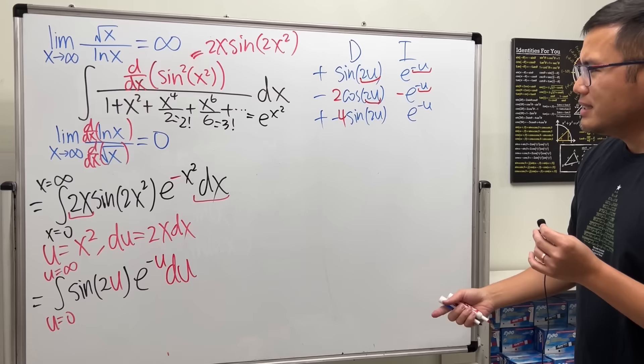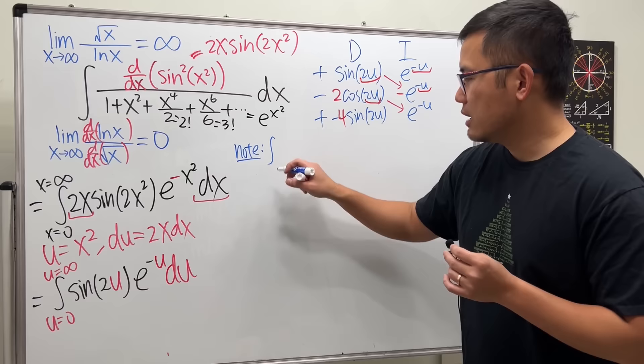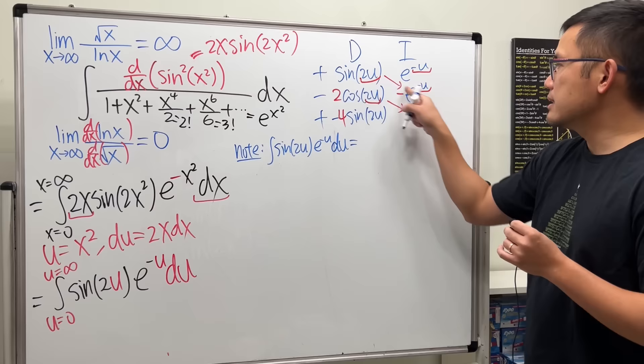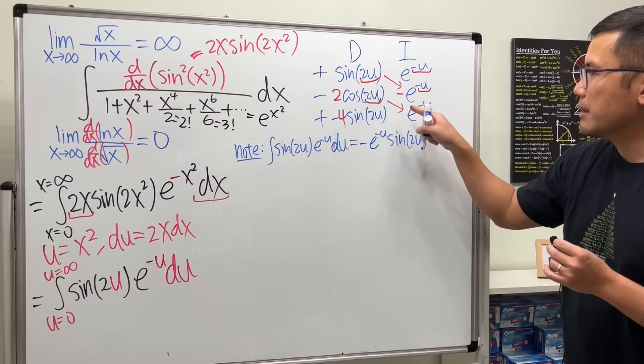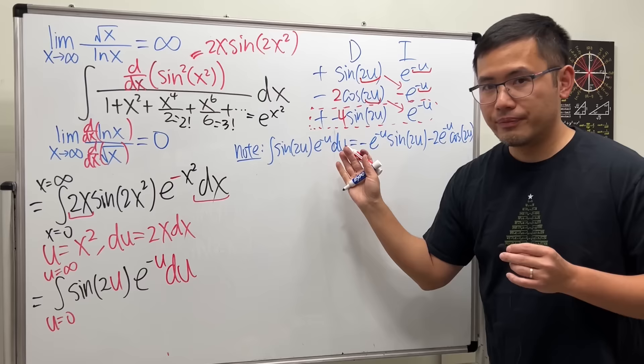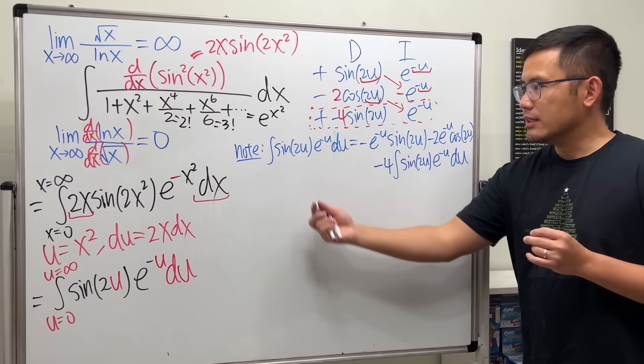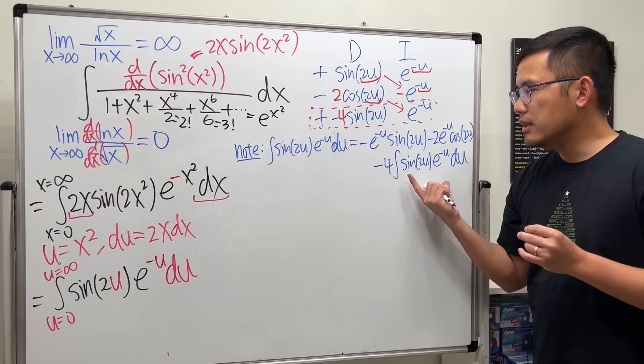Now we read off the DI table: the indefinite integral of sin(2u)·e^(−u) du equals this times that — which is −e^(−u)·sin(2u) — and then this times that — minus 2e^(−u)·cos(2u). Finally we still have to subtract 4 times the integral of sin(2u)·e^(−u) du. This integral repeats from the original with a coefficient of −4, so we add 4 of them to both sides.